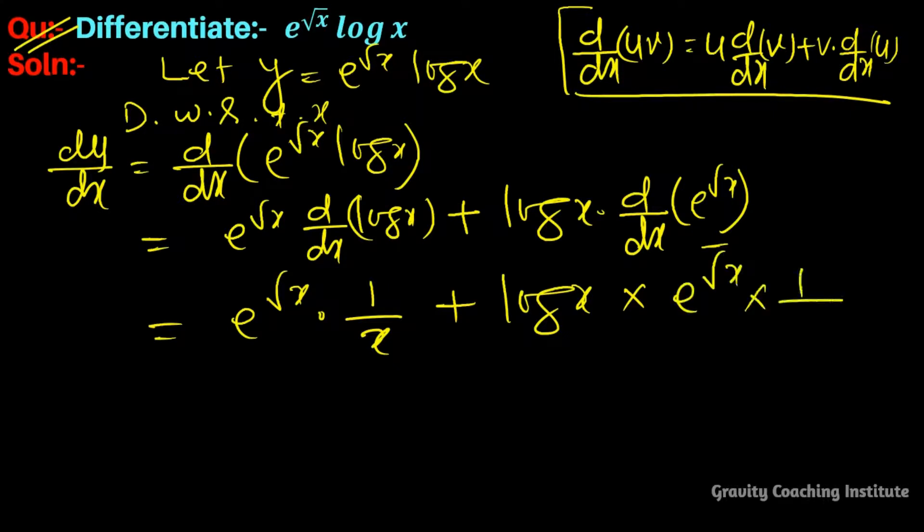Plus log x, and here we apply chain rule. So e to the power root x into one upon two root x. And now we take e to the power root x as a common.